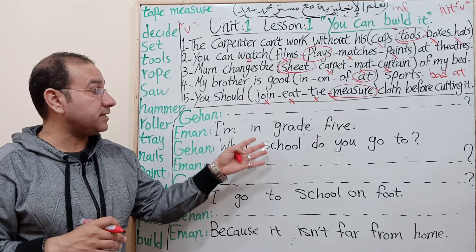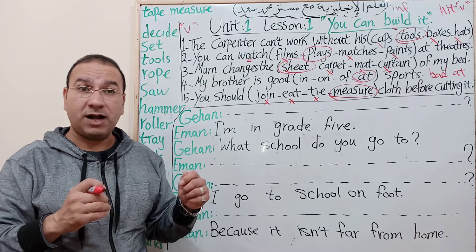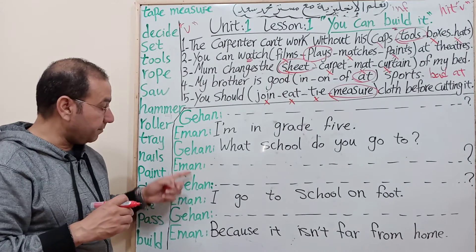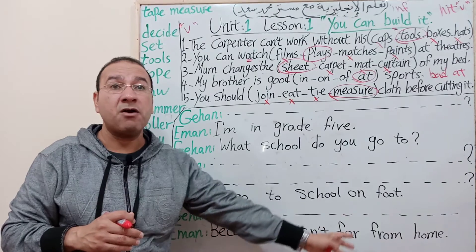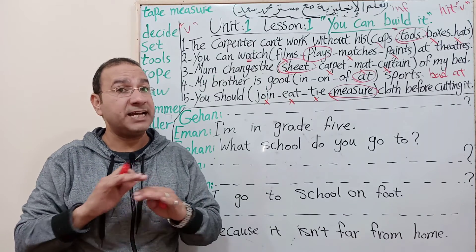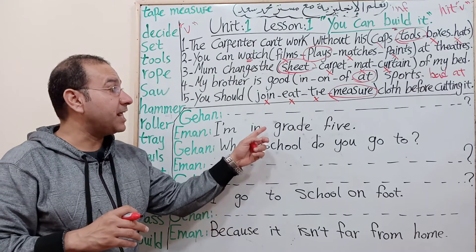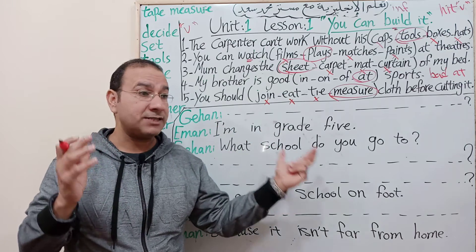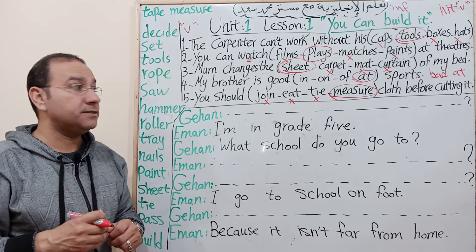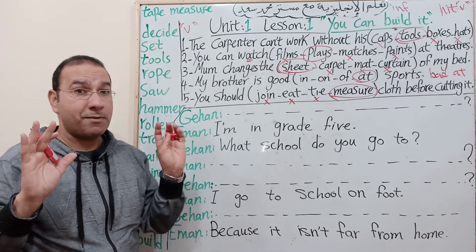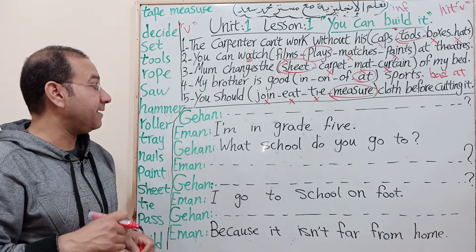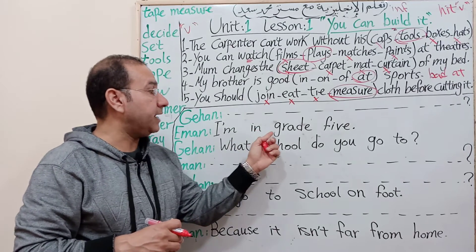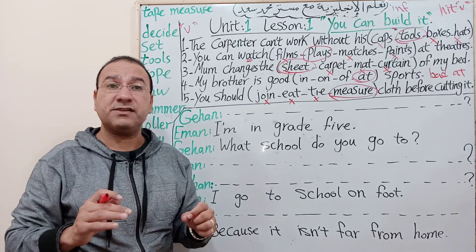We have another exercise. For the dialogue exercise, you must watch and focus before solving. Identify who is speaking, read the whole dialogue two or three times, don't rush. The answer tells you the question and the question tells you the answer. After understanding the dialogue well, you'll know how to solve it. The answer is: 'I am in grade 5.'